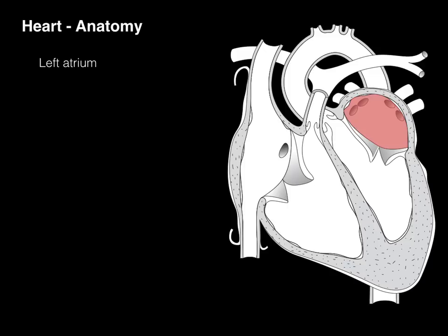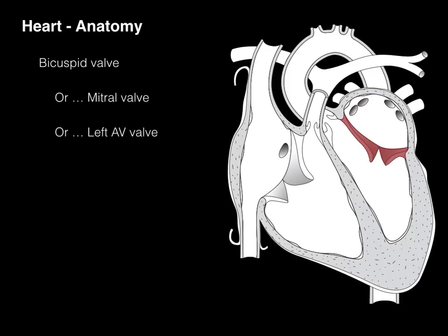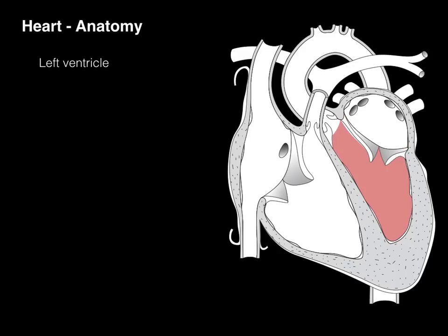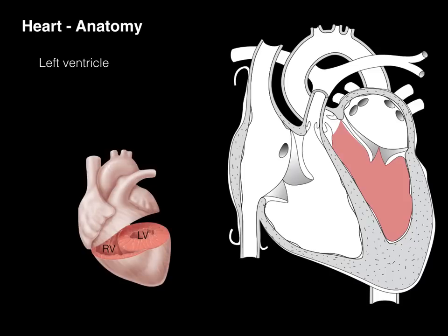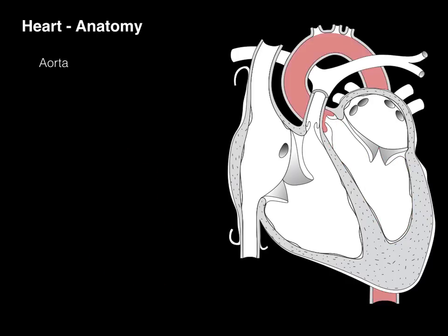The left atrium delivers the blood through the bicuspid valve, also called the mitral valve or the left AV valve, into the left ventricle. The left ventricle sends the blood to all tissues of the body — heart, systemic, and so forth. This is why, if we look at a cross section through the heart, the left ventricle myocardium is remarkably thicker than the right ventricle. The right ventricle just sends blood to the lungs a few inches away, while the left ventricle sends it to the tip of your toes. The blood then goes through the aortic valve into the aorta — ascending, aortic arch, descending, and so forth.